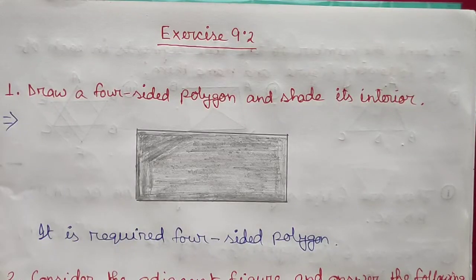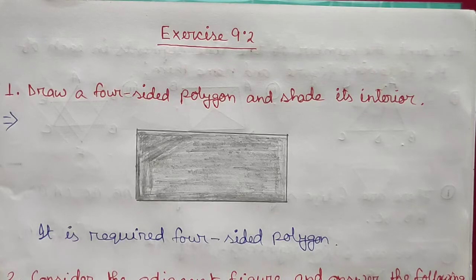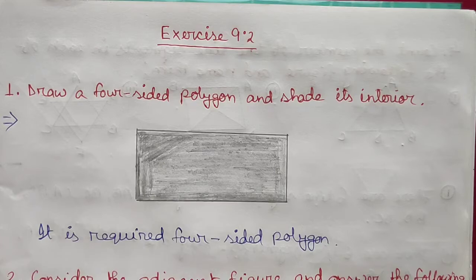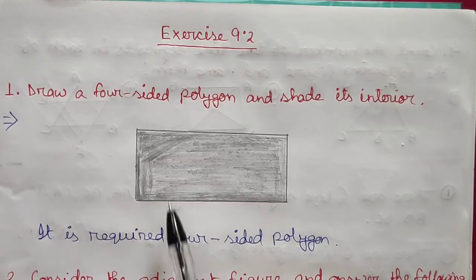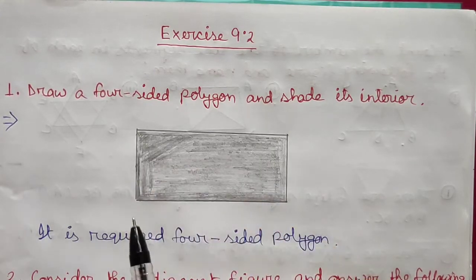Hello students, today in this video we will solve Exercise 9.2. The first question is: draw a four-sided polygon and shade its interior. A polygon is a four-sided closed figure — it is a closed figure with no openings.